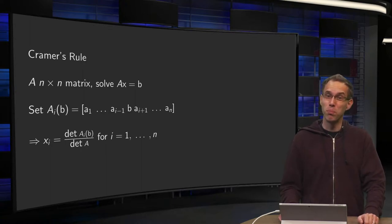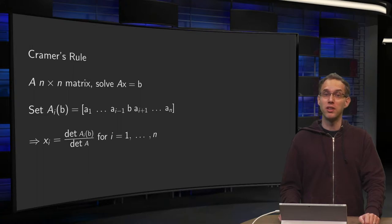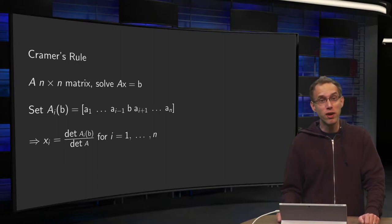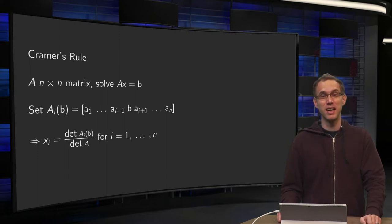Second, and more importantly, and this is how I used it myself, sometimes your coefficient matrix contains unknown parameters. In that case, row reduction is very cumbersome and Cramer is still quite doable. So especially in this second case, Cramer is used a lot.